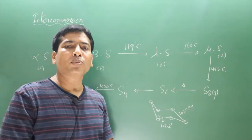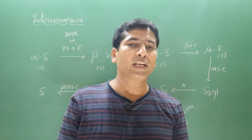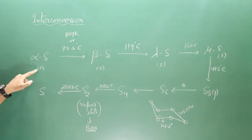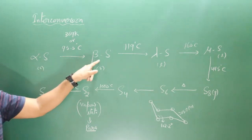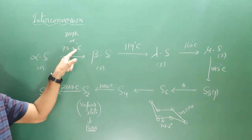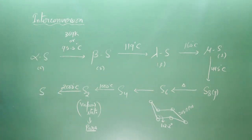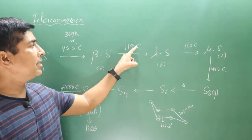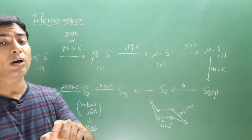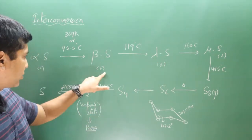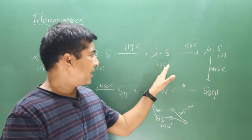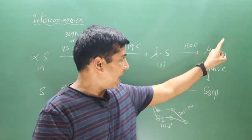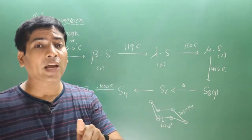Now let's discuss the interconversion of allotropes of sulfur. Alpha sulfur and beta sulfur are interconvertible at 369 Kelvin (95.5 degrees Celsius). Beta sulfur can be converted into lambda sulfur at 119 degrees Celsius — lambda sulfur is a yellow color transparent liquid. Lambda sulfur can be further converted into mu sulfur when we maintain a temperature of 160 degrees Celsius.